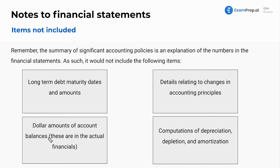The dollar amount of account balances is also not included. Remember, that's reporting — that's reporting the numbers in the financials. In the notes and in the summary, we are describing how these numbers came about. Numbers are not included, so computations of depreciation, depletion, and amortization are not going to be included in the summary of significant accounting policies.